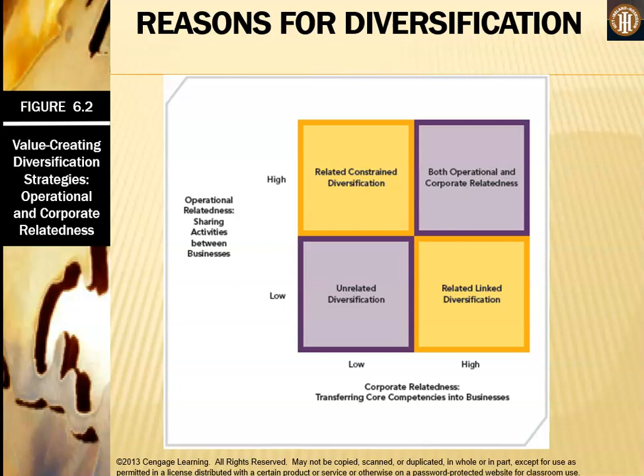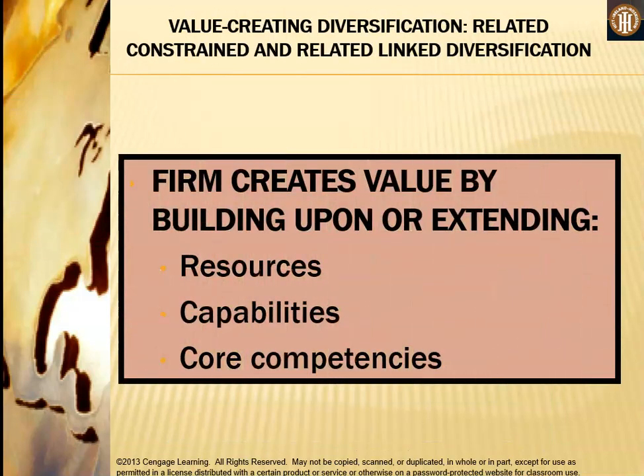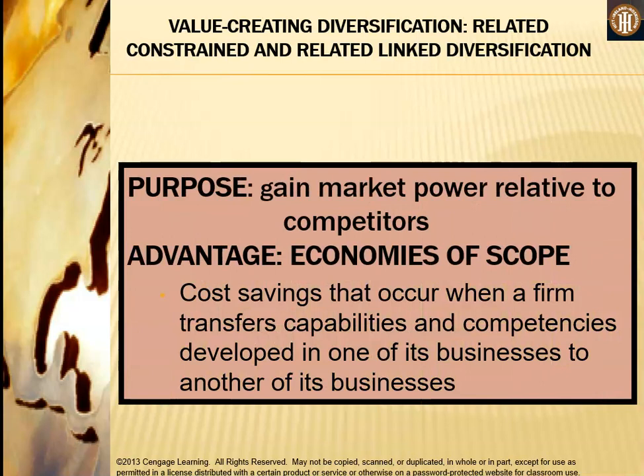Firms create value by building upon or extending their resources, capabilities, and core competencies, with the purpose of gaining market power relative to competitors. The advantage is economies of scope — the cost savings that occur when a firm transfers capabilities and competencies developed in one of its businesses to another. This means new businesses don't have to start from scratch building their own capabilities, because those are transferred from another company within the group.